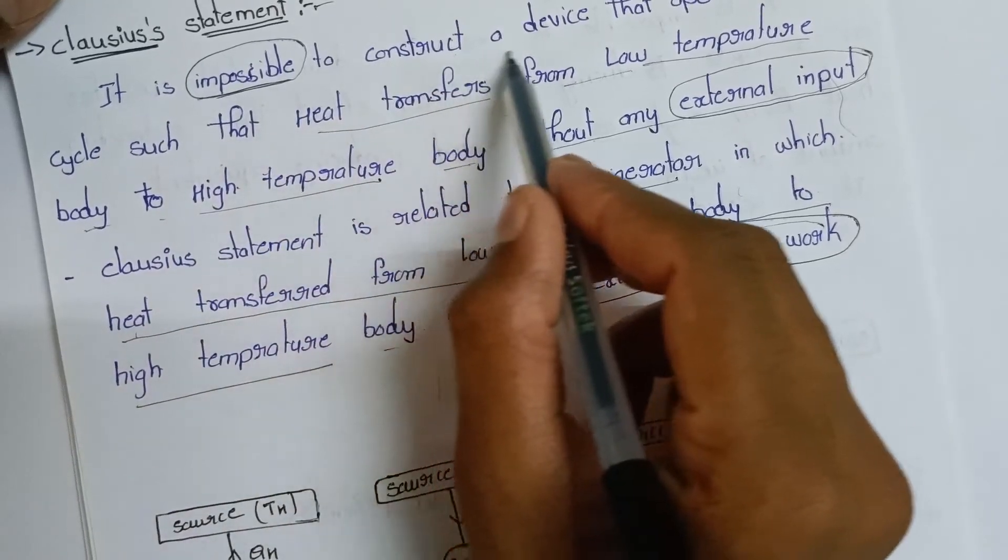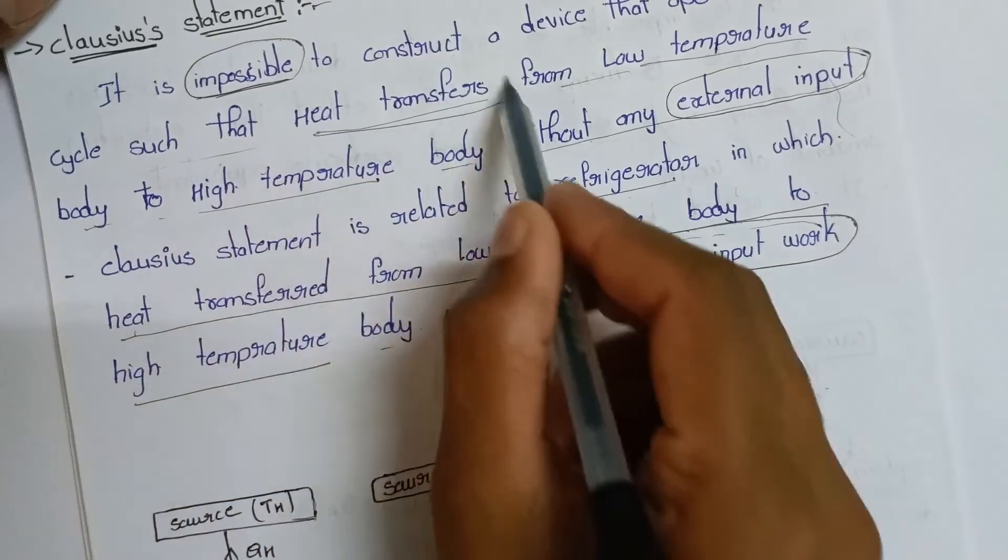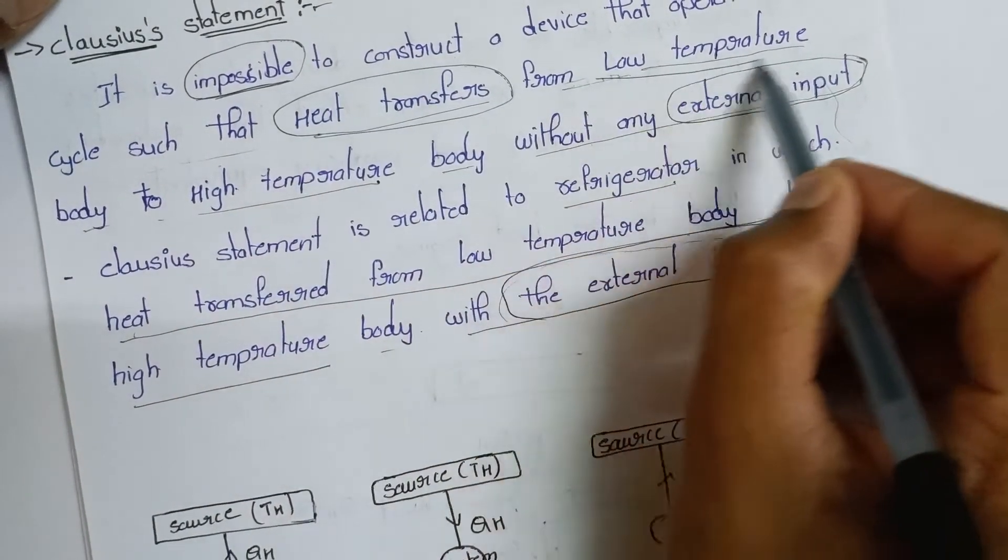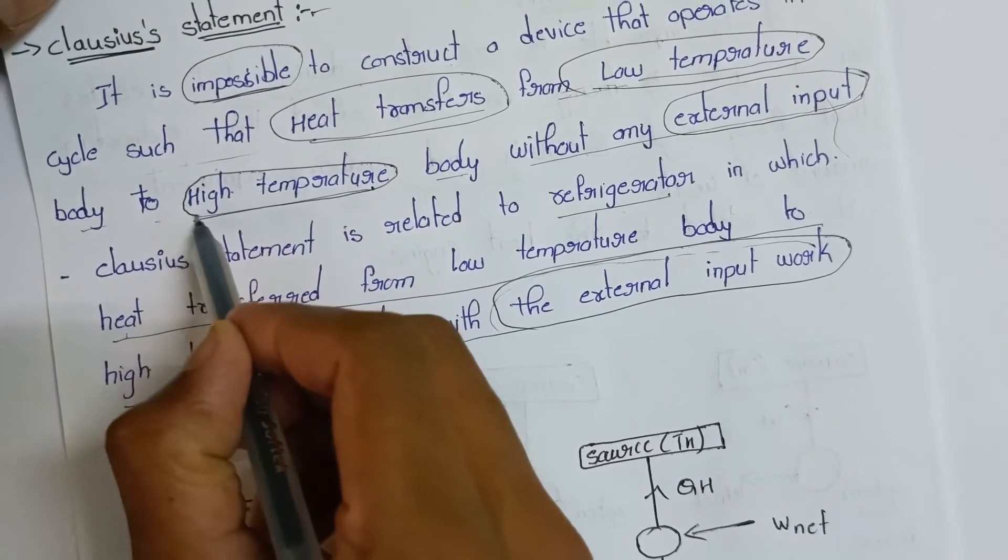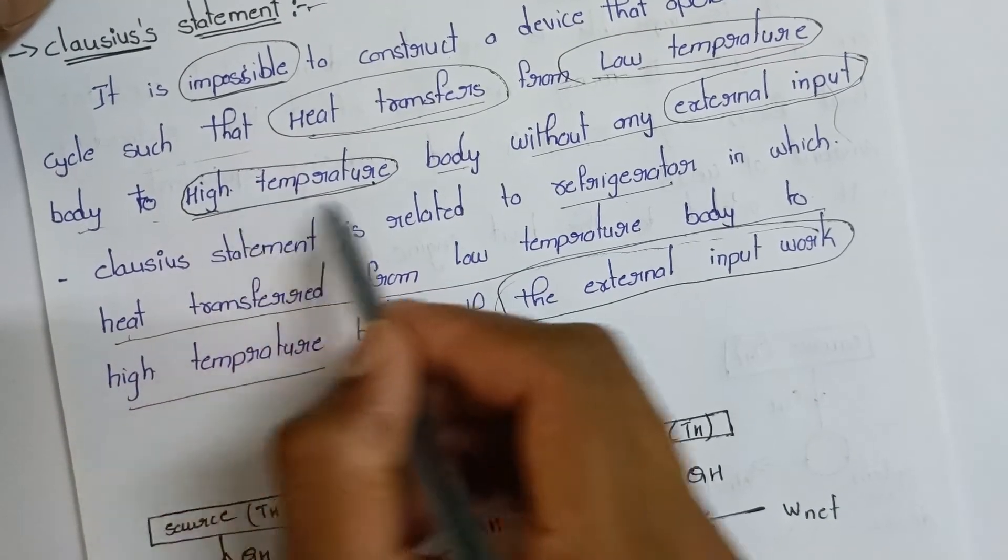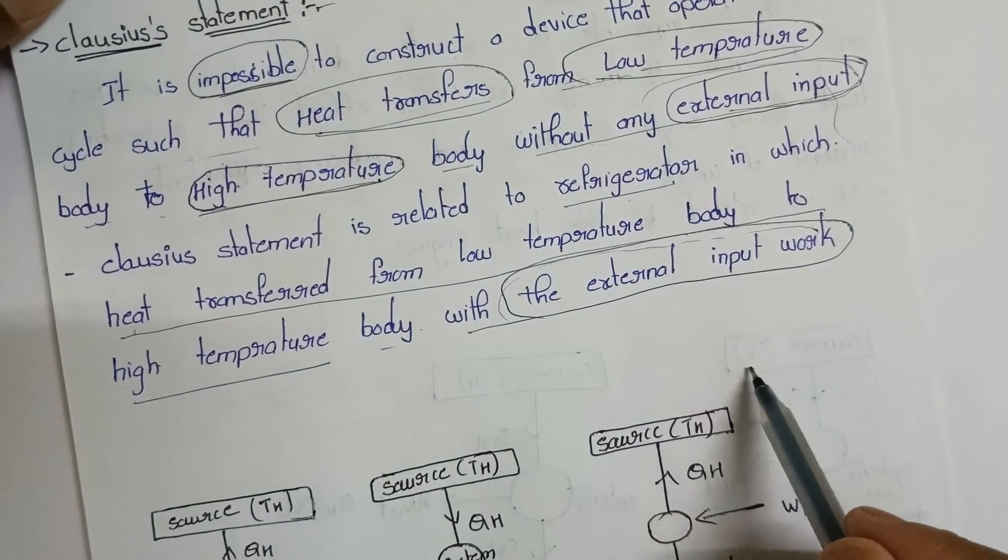It is impossible to construct a device that operates in a cycle such that heat transfer from low temperature body to high temperature body occurs without external input.